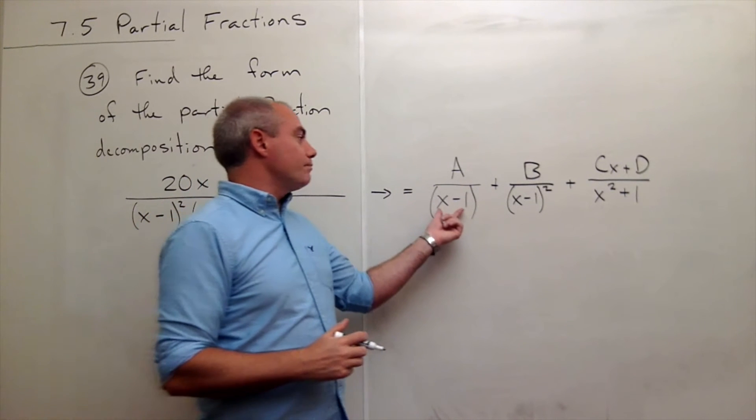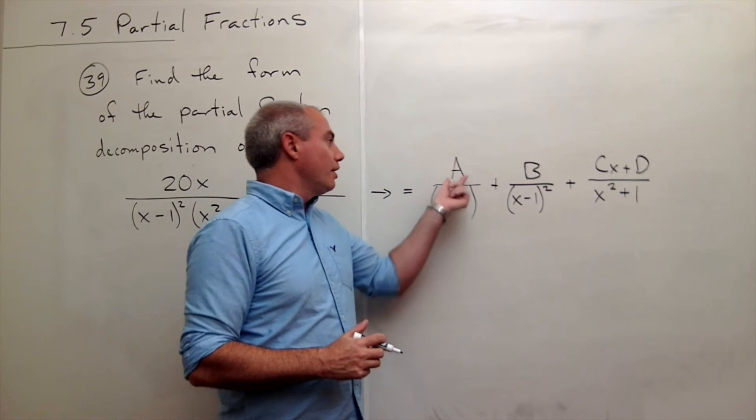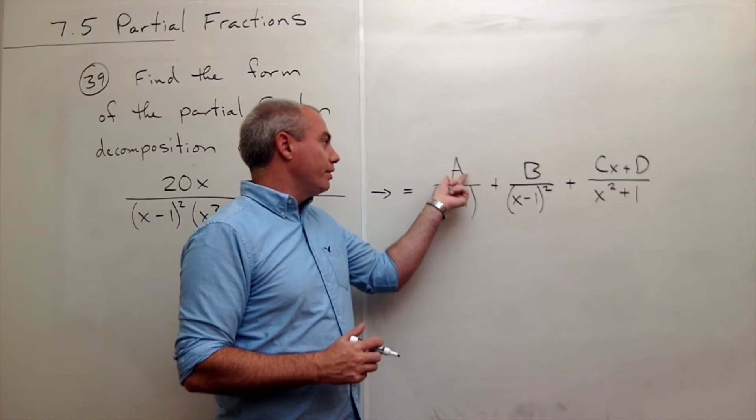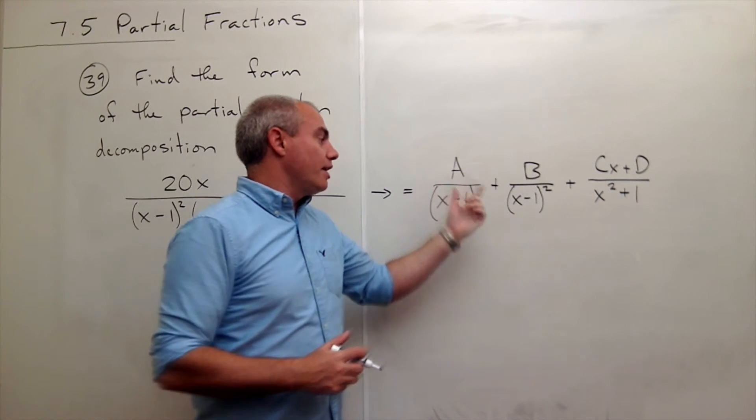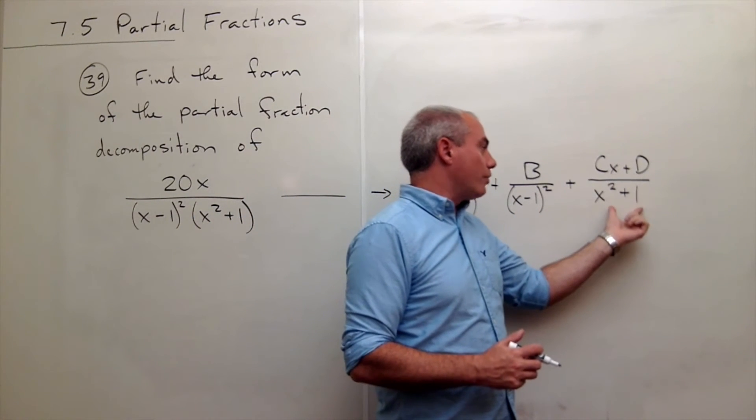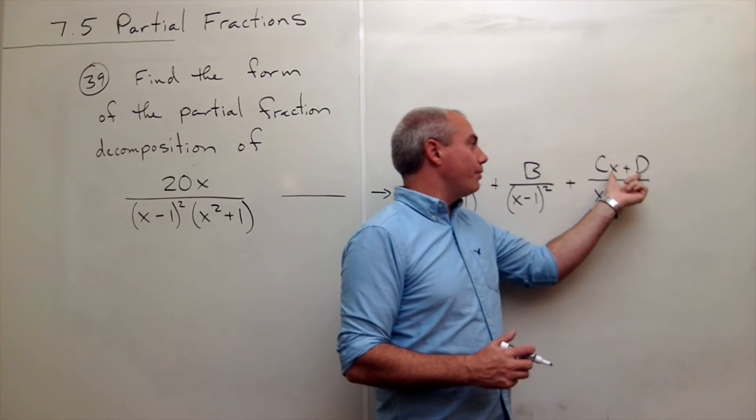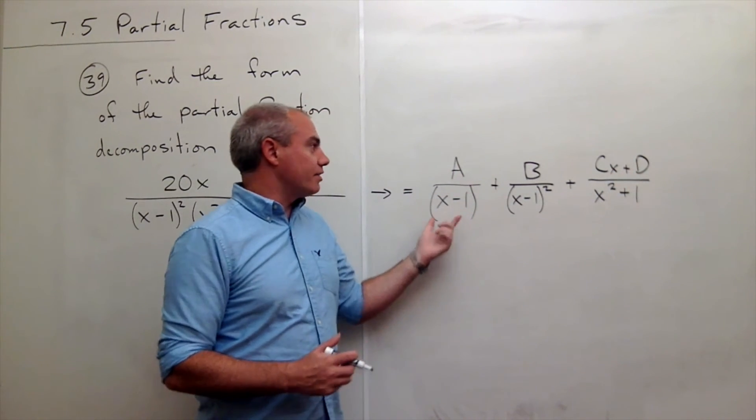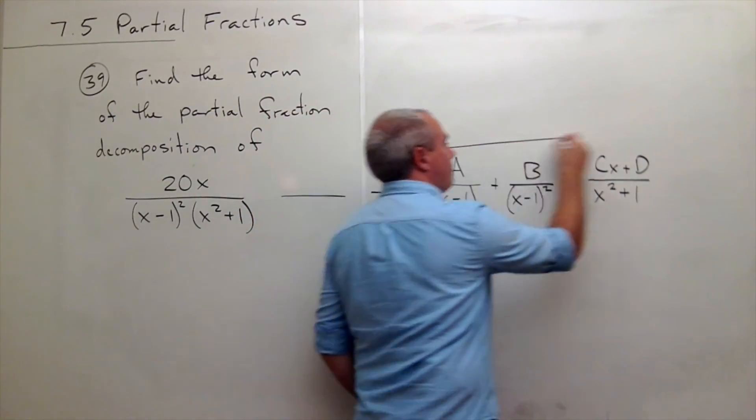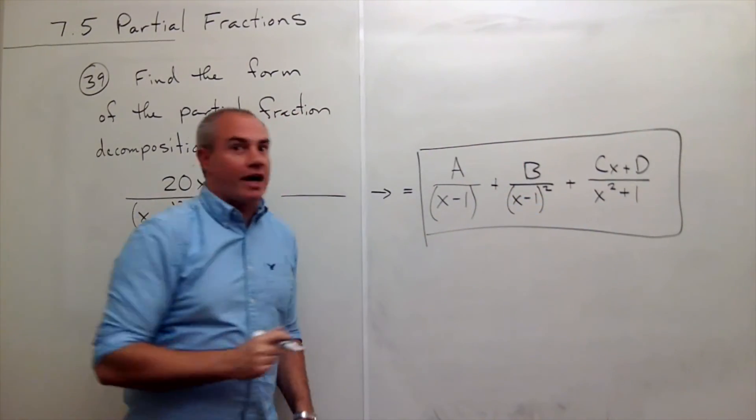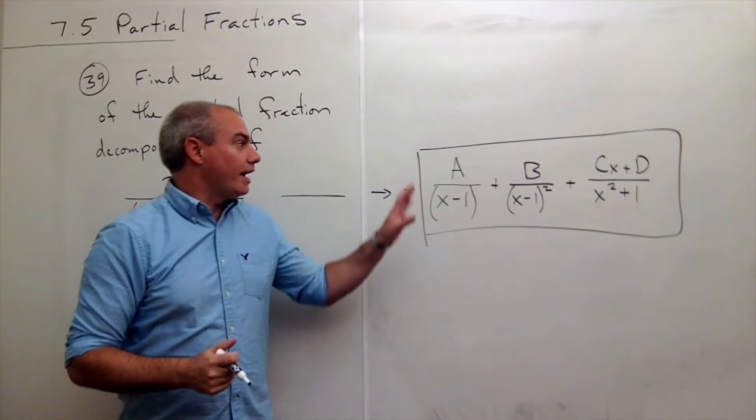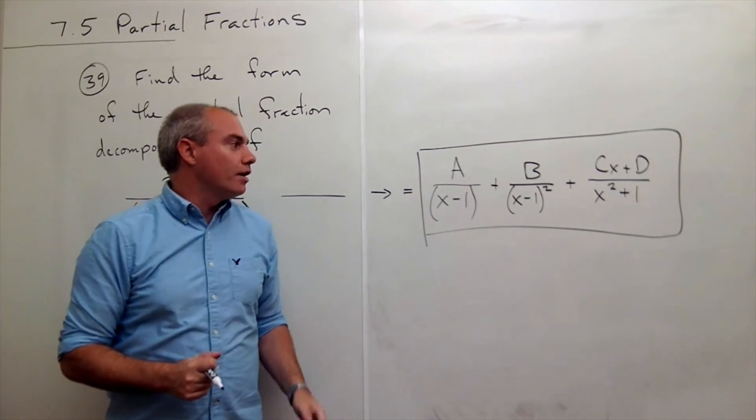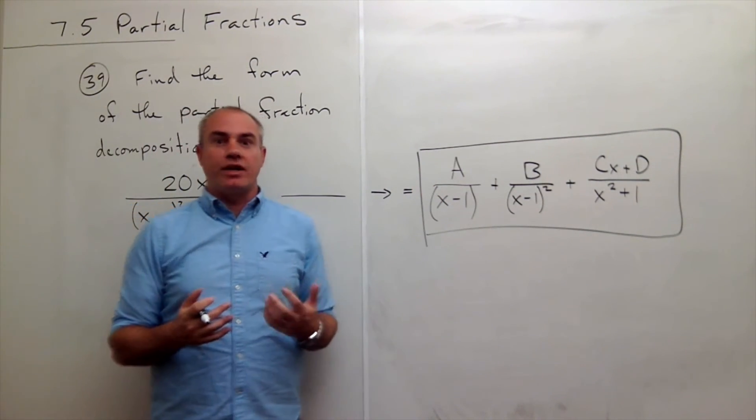So if the bottom term is linear, then the top is a constant. And if the bottom is a quadratic, then the top could be a linear. So we've got our setup of our partial fraction decomposition, and that's all this problem is really asking for.